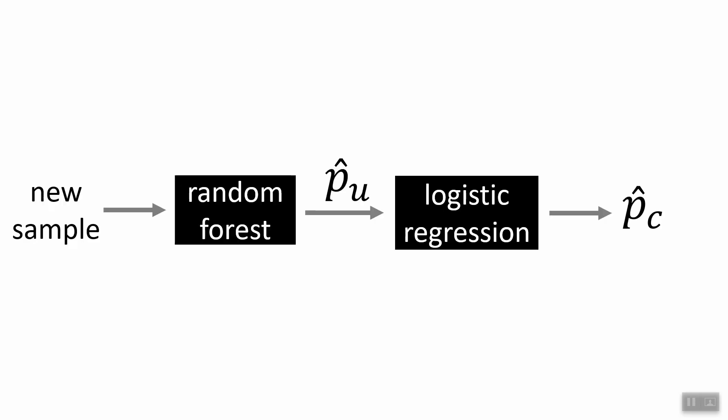And so in a picture, it looks like this. After we've built the random forest and the calibration layer, we feed the new sample into the random forest and it gives us the uncalibrated probability, or p hat underscore U. We feed that into the calibration layer, or the logistic regression, and then we get the calibrated probability, p hat underscore C. And that's it.